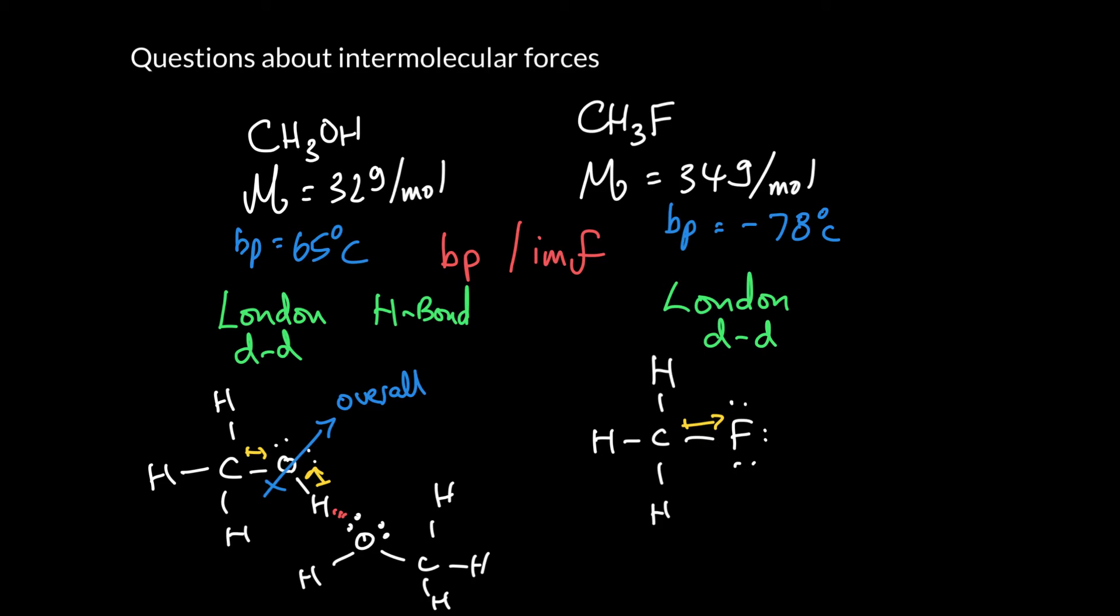Now you might say, well, what about this hydrogen over here? Can it hydrogen bond? The answer is no. It's got to be bonded to one of those three electronegative elements: oxygen, nitrogen, or fluorine. You might say, well, can this hydrogen bond? It's got a lone pair on a fluorine, so that works. And it's got a hydrogen on a carbon, which doesn't work. So it turns out that it has half of what it needs.